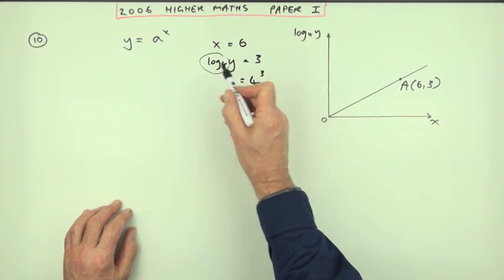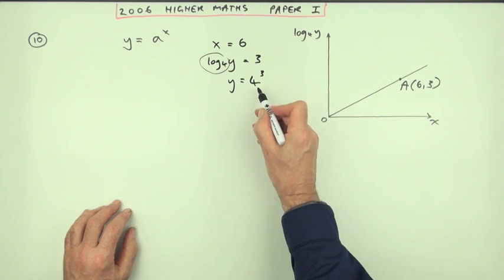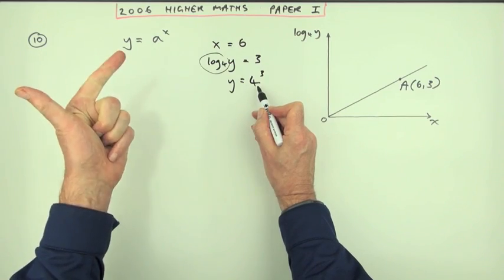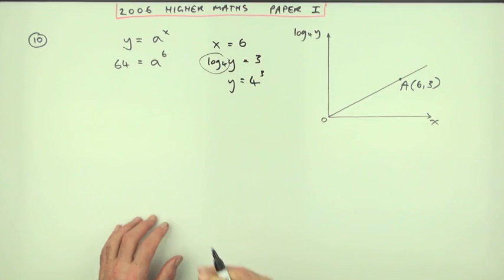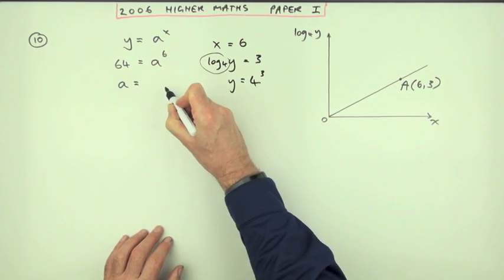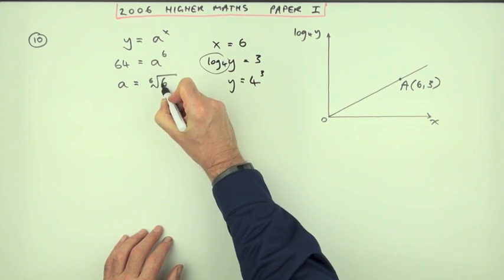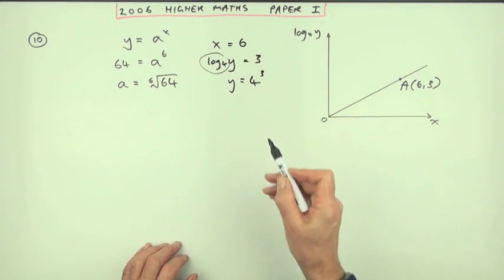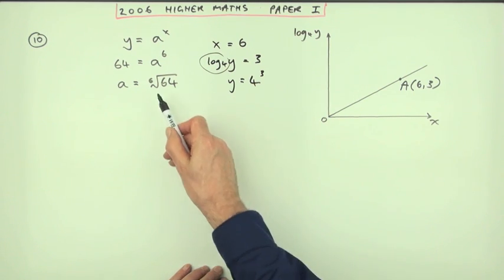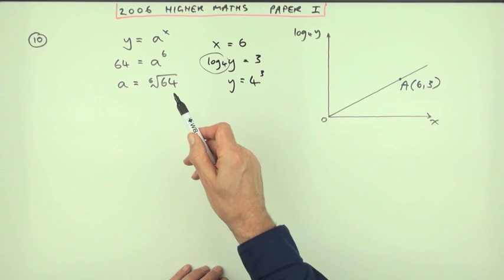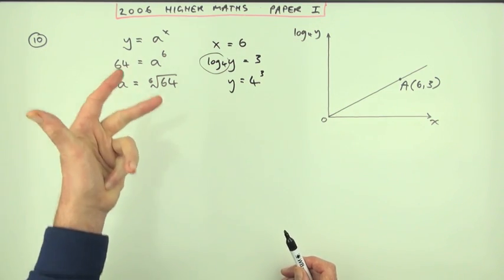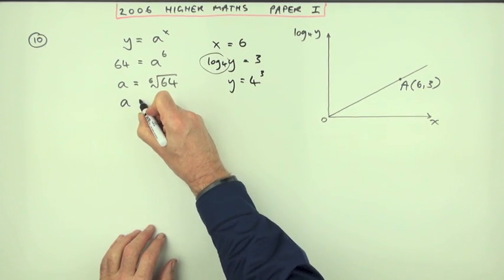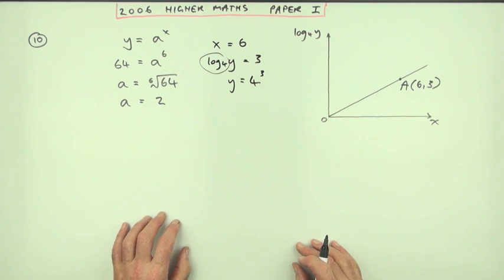Substitute those values in, so you've got 4 to the power 3 equals a to the power 6. Now 4 to the power 3 - this is paper one, so you could just do it on your fingers. 4 times 4 is 16, times 4 is 64. So you've got 64 equals some number to the power 6, which means that a is going to be the sixth root of 64. This is paper one, so it must be a nice number. Hopefully you realize you've got powers of 2 there. 2 to the power 6 is 64: 2, 4, 8, 16, 32, 64. Which means that a equals 2.